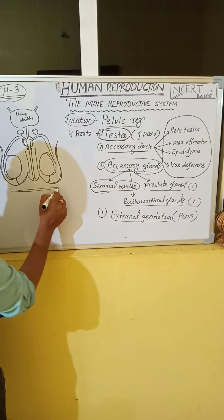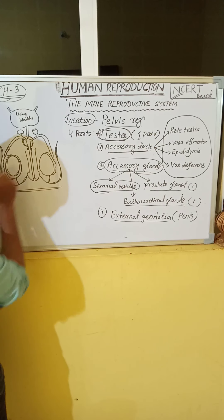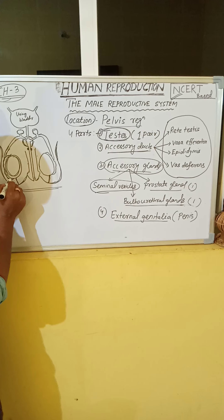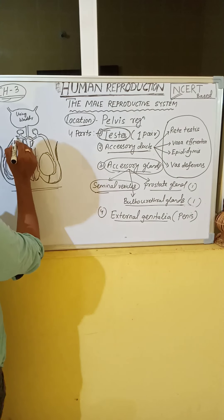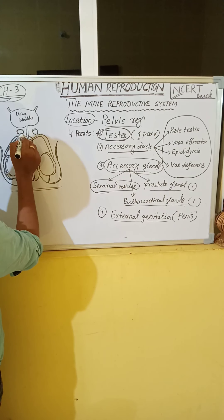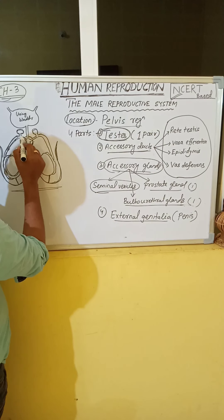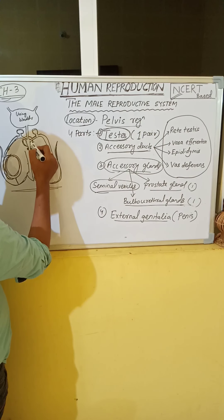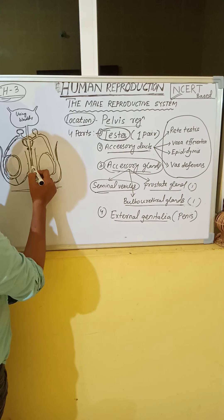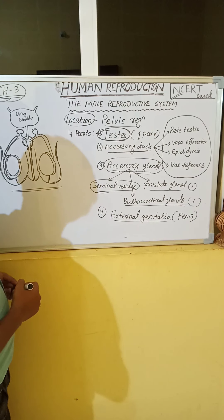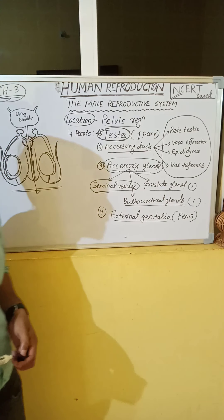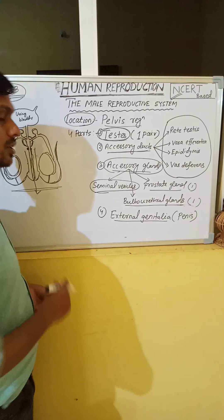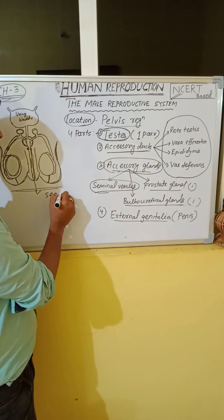Looking at the diagram of the male reproductive system: this is the testes, this is the epididymis. From the epididymis, the vas deferens arises and connects with the seminal vesicles. The seminal vesicles connect with the prostate gland, and along the urethra it runs towards the penis. The urethra is the common passage for both semen and urine.